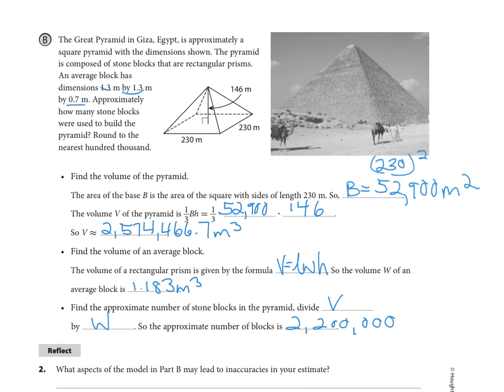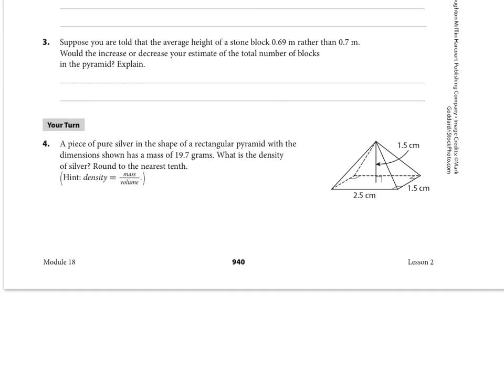So this is the general process you want to walk through here as we get through the Your Turn problems. Your Your Turn for right now is, at the bottom here, we have a piece of pure silver in the shape of a rectangular pyramid with the dimensions shown. We're told that it has a mass, and we want to know what is the density of silver. So we're given the mass. Remember, density is mass divided by volume, if you remember that formula from science. So we are going to be calculating the volume with our formula, and then taking the mass that we're given, and then finding out the density that way. All right, we will see you guys tomorrow. Thank you. Bye now.